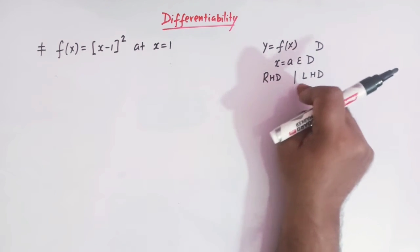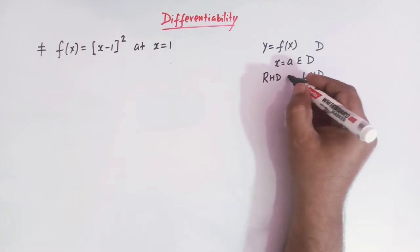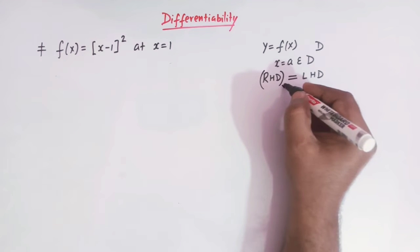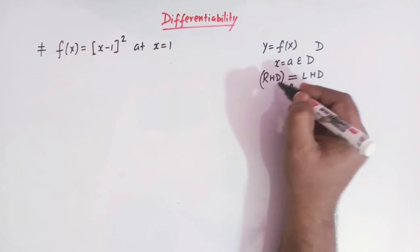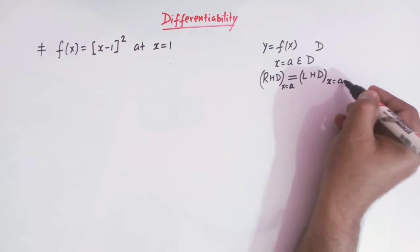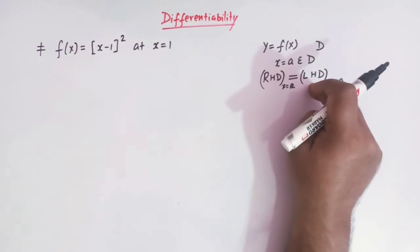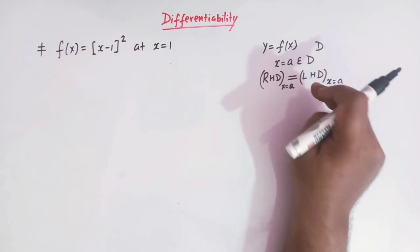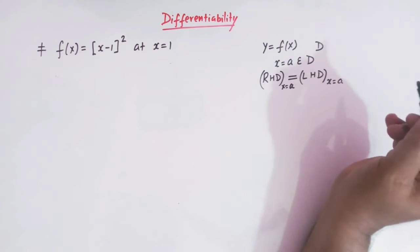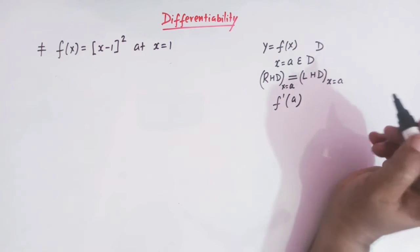If the two limits exist and they are finite and equal, then we say that the function is differentiable at x = a. So if the right hand derivative at x = a exists and is finite, and it equals the left hand derivative at x = a, which also exists and is finite, then the function is differentiable at x = a, and we write f'(a).